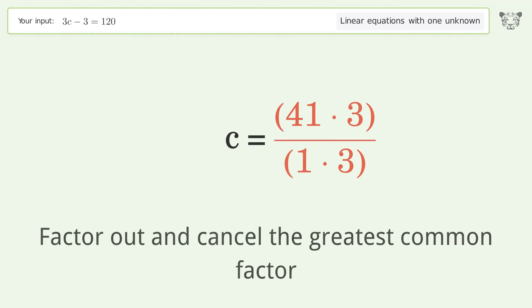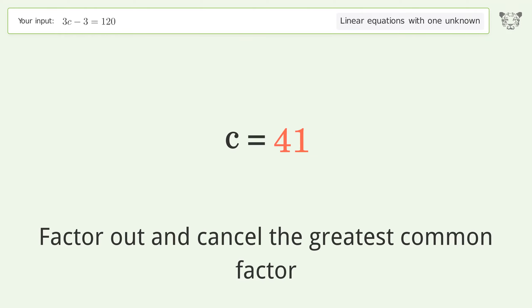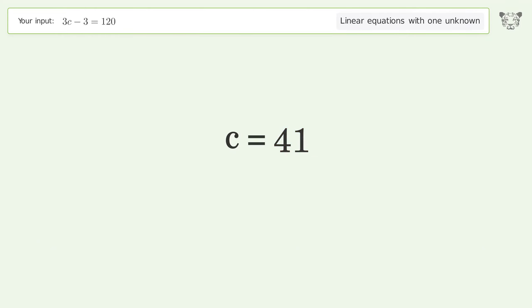Factor out and cancel the greatest common factor. And so the final result is c equals 41.